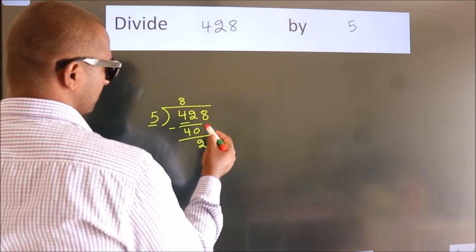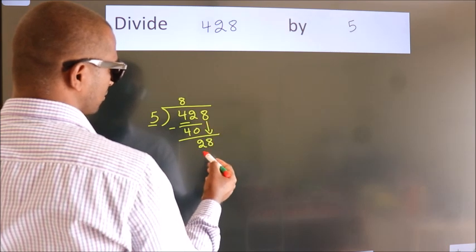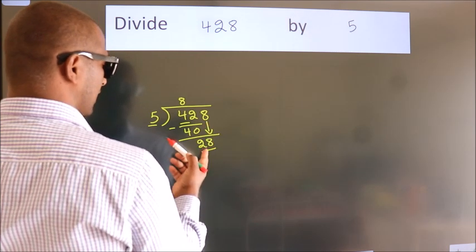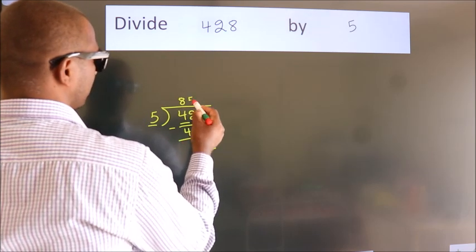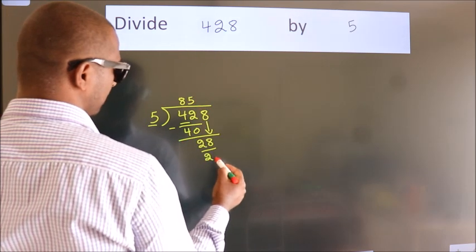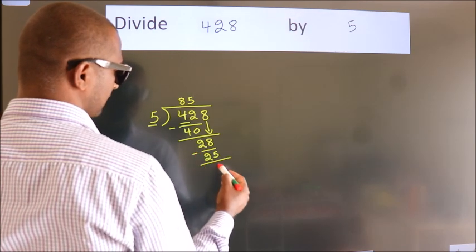After this, bring down the beside number. 8 down, so 28. A number close to 28 in the 5 table is 5 times 5 is 25. Now we subtract. We get 3.